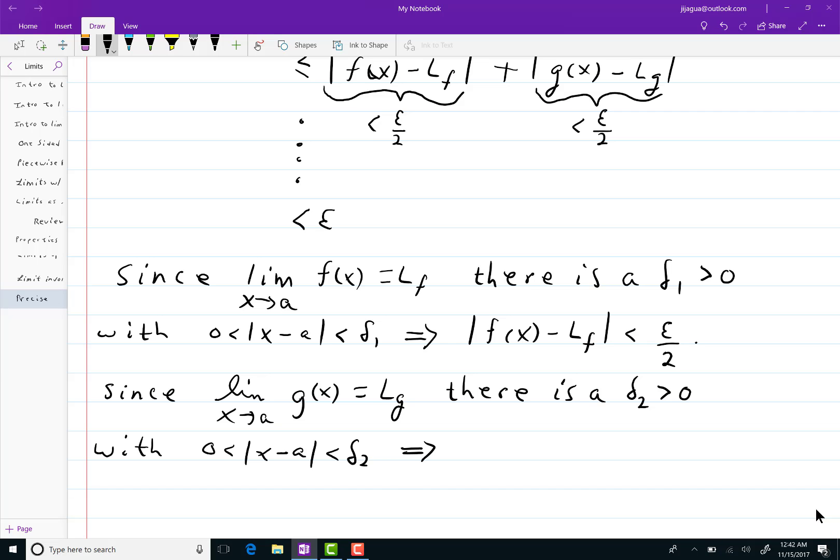implying that the absolute value of g of x minus l sub g is also less than epsilon over 2.